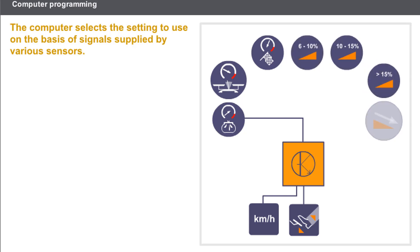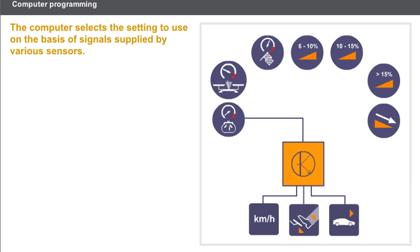To determine the gradient setting, the computer estimates the slope and the resistance to forward movement on the basis of the following information: accelerator pedal position, speed, and vehicle acceleration. The computer must then choose from the driving settings and gradient settings to determine which program to use.